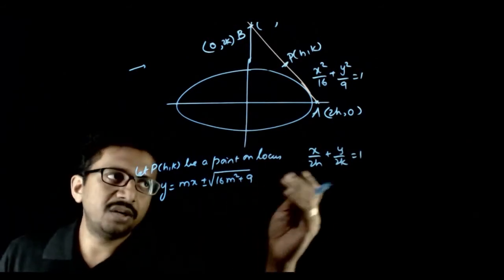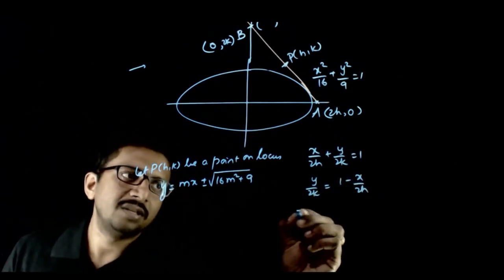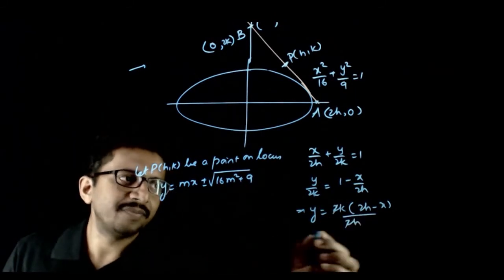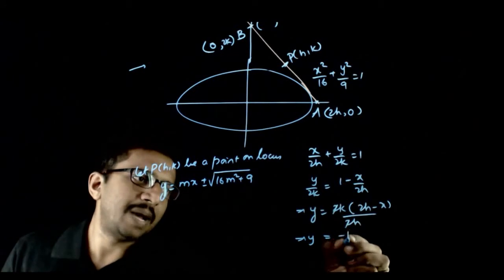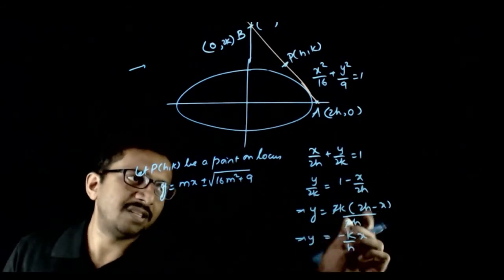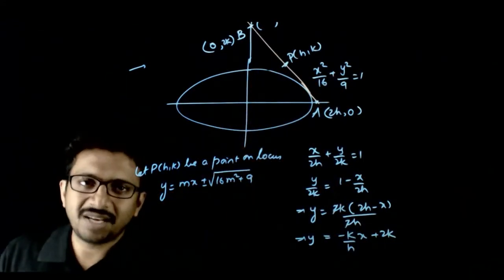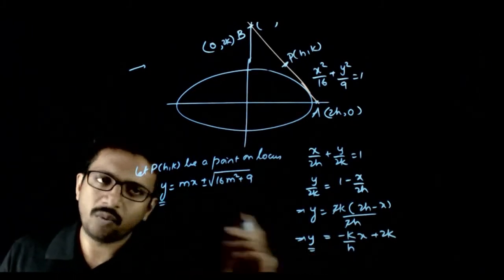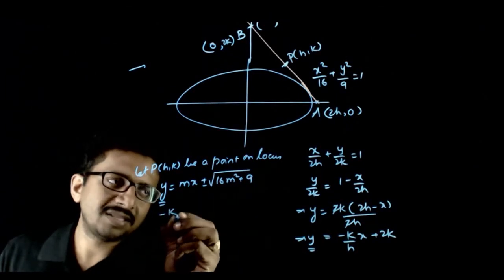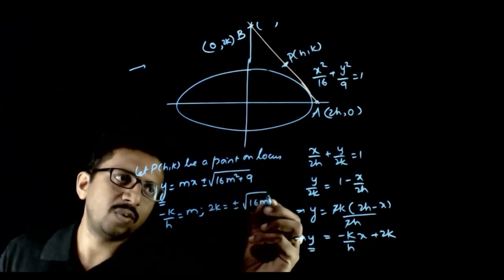If you want to directly equate the coefficients, convert the intercept form: y / (2k) = 1 − x / (2h), which implies y = −(k/h)x + 2k. This should be the same as the tangent equation. Equating coefficients: m = −k/h, and 2k = ± √(16m² + 9).